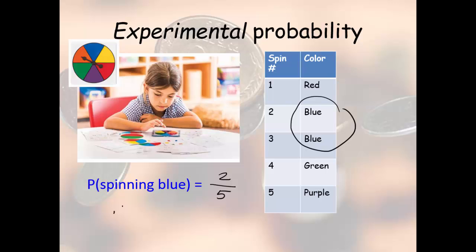If you want to change it to a decimal, you can, or to a percentage. Those are all correct answers. That's experimental probability. It's based completely on data.